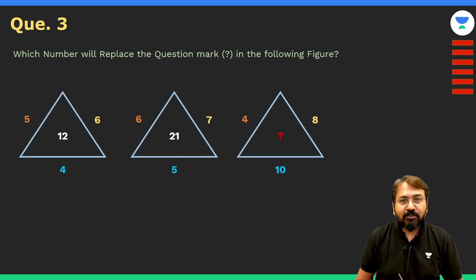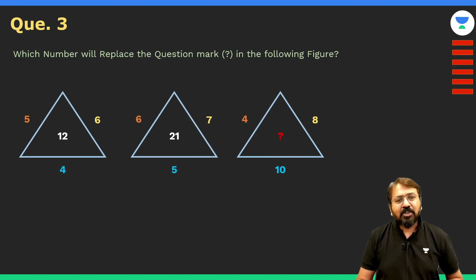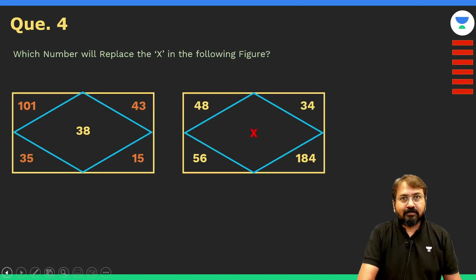Here you are given three triangles and each triangle is surrounded by three numbers and there is one number at the center. Once again, you need to identify or find out which number will replace the question mark. This is the third question of this particular IQ test.